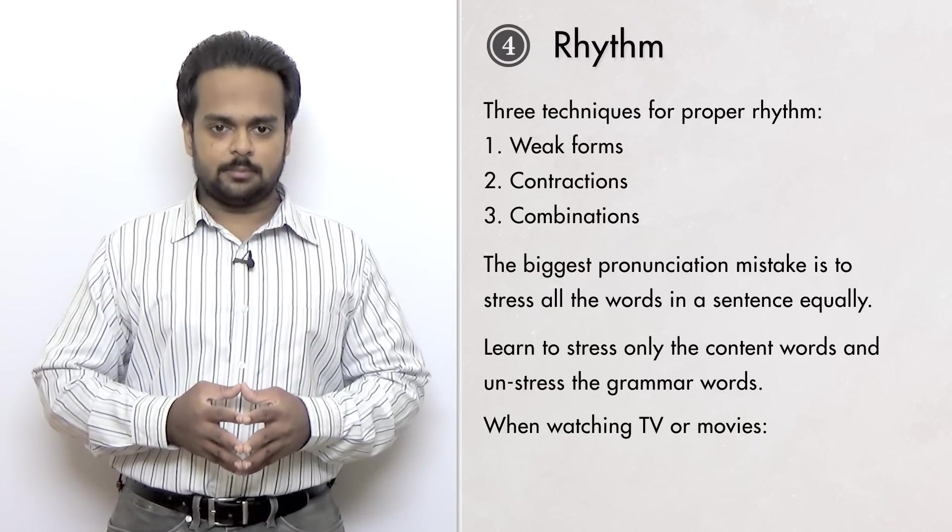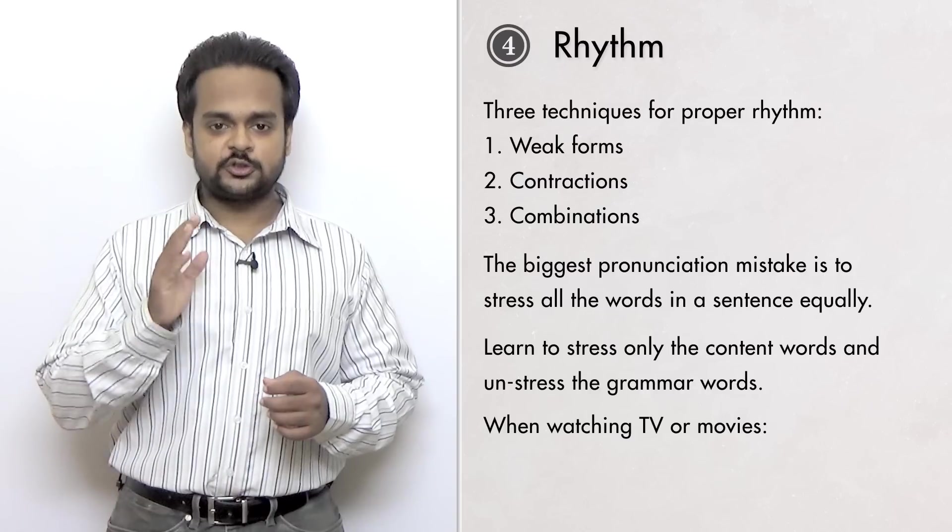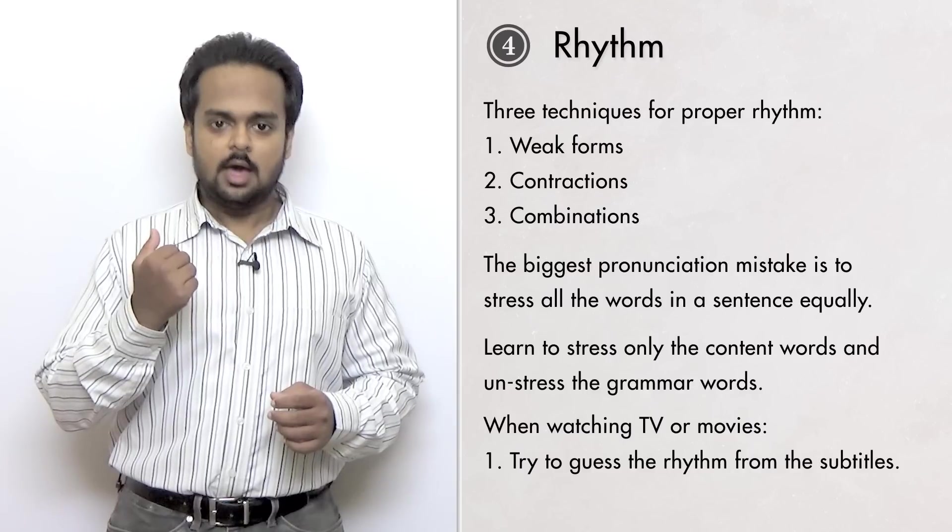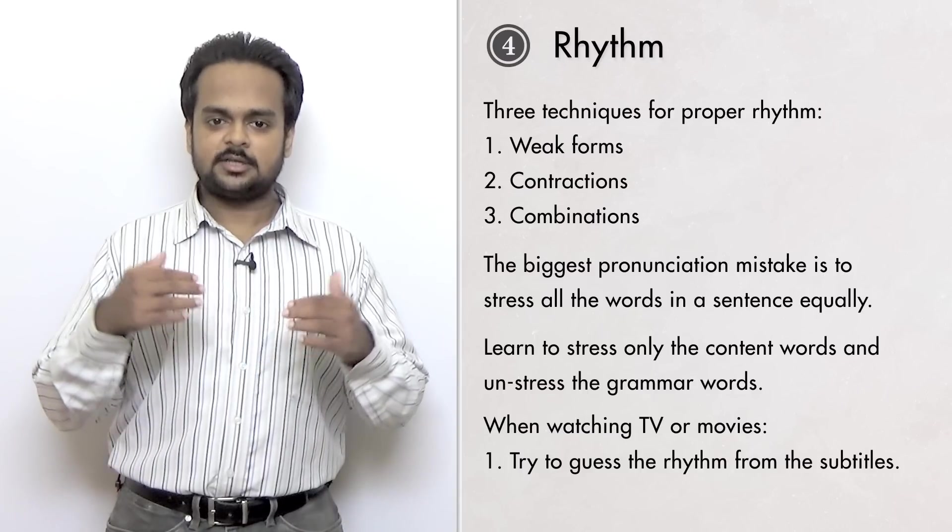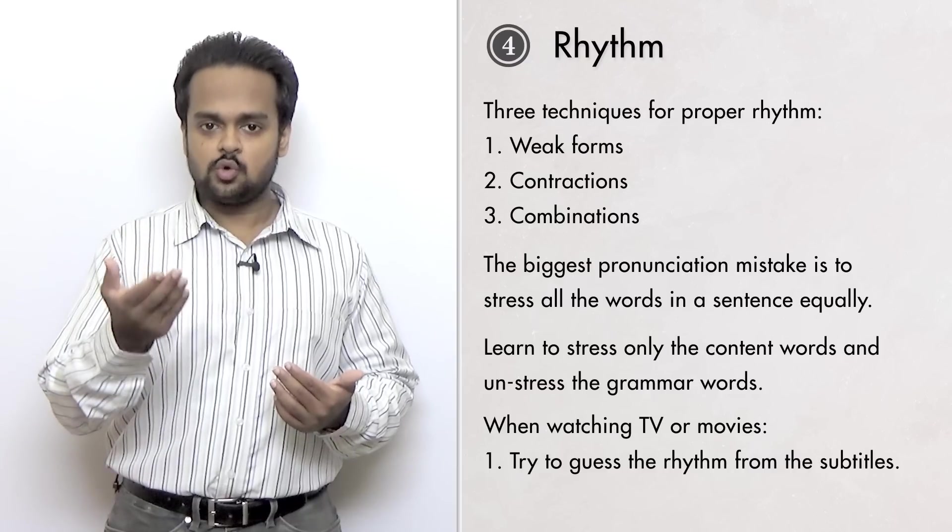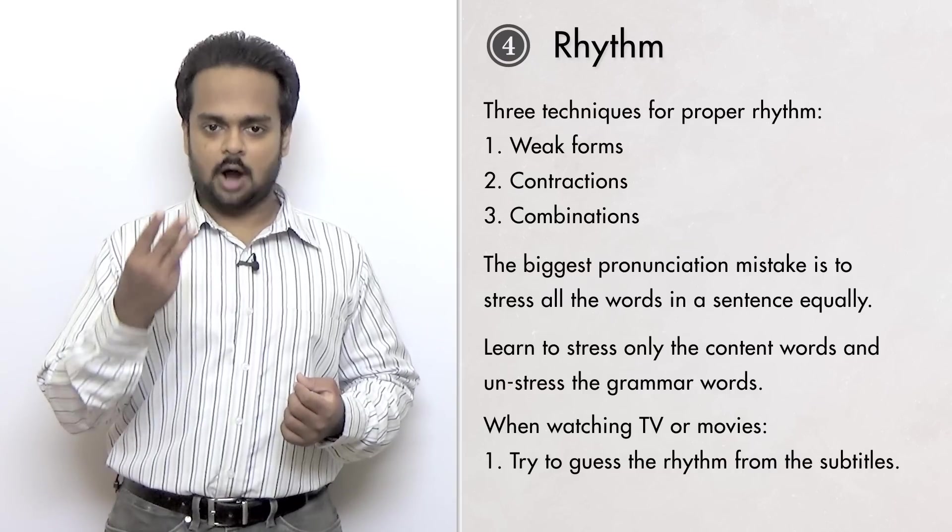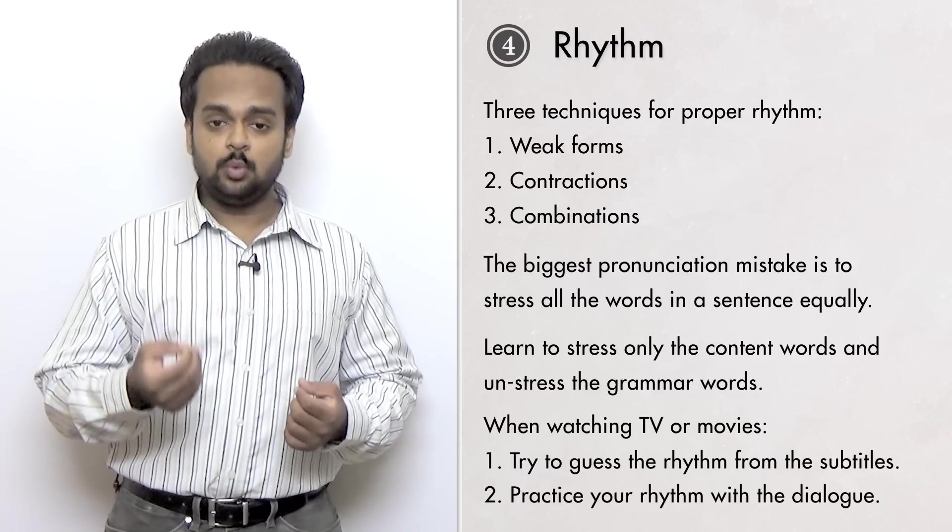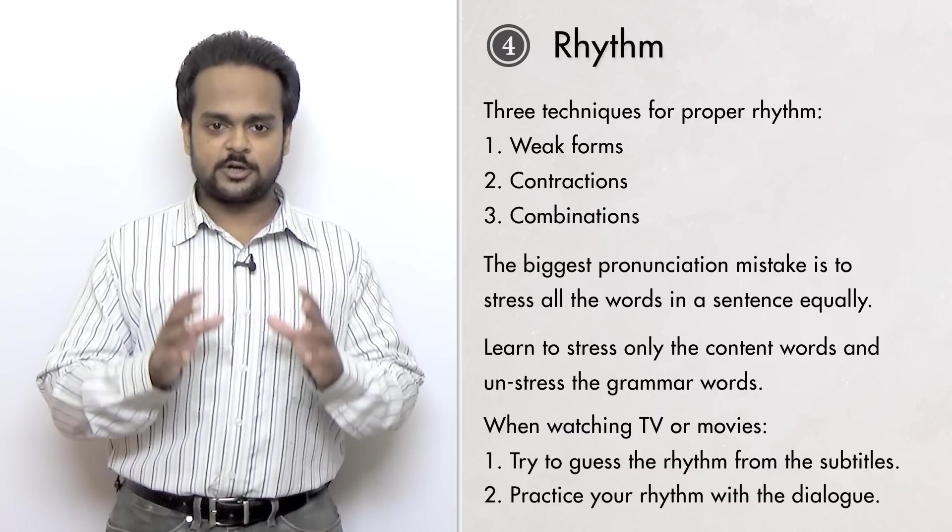You should work on your rhythm when you watch English language movies and TV shows. A great technique is to stop a scene and look at the subtitles. Before you hear the dialogue, think about which are the content words that will be stressed. Try to say it on your own with the right rhythm. Then play the scene and see if you got the rhythm correct. Watch for the three techniques – weak forms, contractions, and combinations. Then practice speaking along with the actors. This will give you the ability to both identify the rhythm of English and to be able to use it correctly.